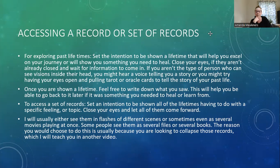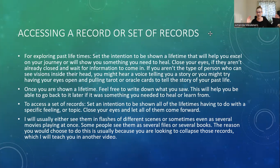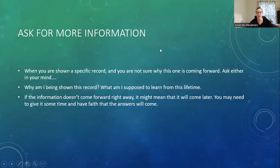If you want to access a set of records, set the intention to be shown all the lifetimes having to do with a specific feeling or topic. Close your eyes and let them all come forward. I usually see them in flashes of different scenes or as several movies playing at once. Some people see them as several files or books. You'd typically do this when you're looking to collapse those records — healing and forgiving yourself around a person you still have an emotional attachment to, and then letting go of all those records by collapsing them.